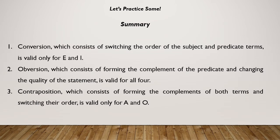Let's read the summary once again. Conversion, which consists of switching the order of the subject and predicate terms, is valid only in E and I propositions. Obversion, which consists of forming the complement of the predicate and changing the quality of the statement, is valid for all four types of categorical propositions. Contraposition, which consists of forming the complements of both the subject and predicate terms and then switching their order, is valid only in A and O propositions.